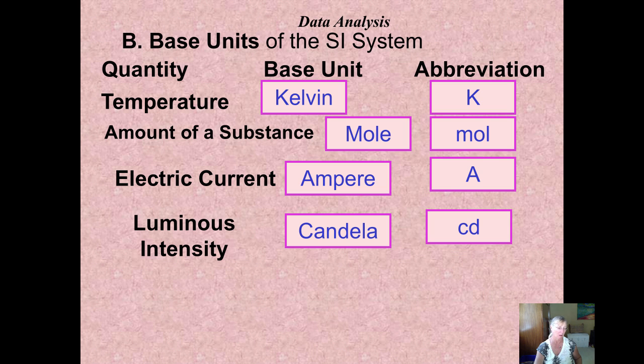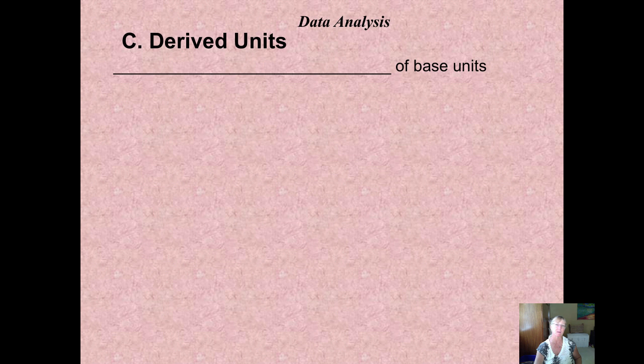That might be something more, well not in this chemistry. You'd use that more in physics, or if you were doing oxidation and reduction, you'd use the amps. Those are our base units of the System Internationale.